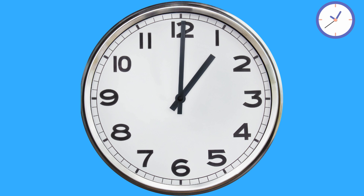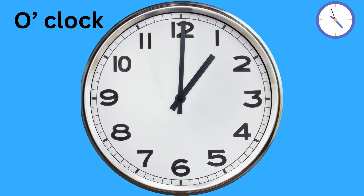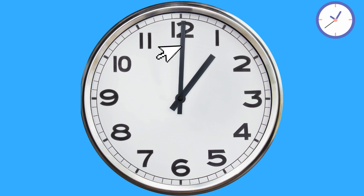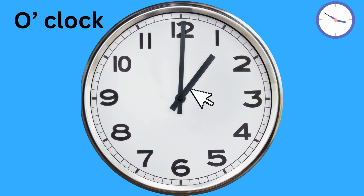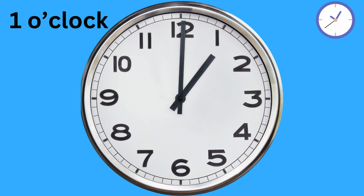Whenever you see the long hand pointing to twelve, we say o'clock. Now look at this. The long hand is at twelve, while the short hand is at one. Therefore, we say the time is one o'clock.